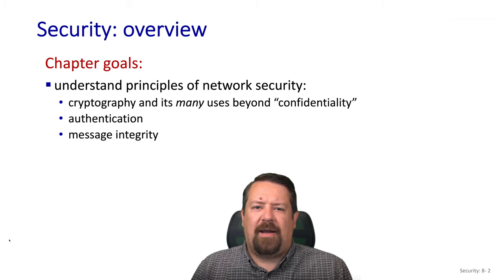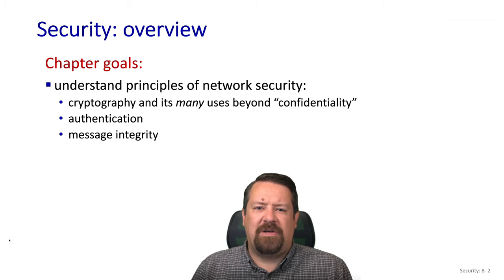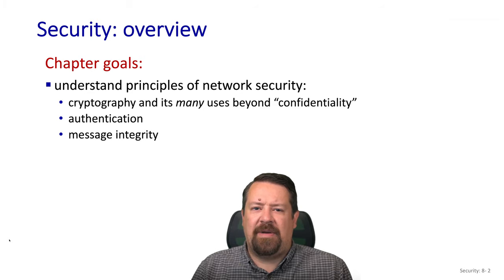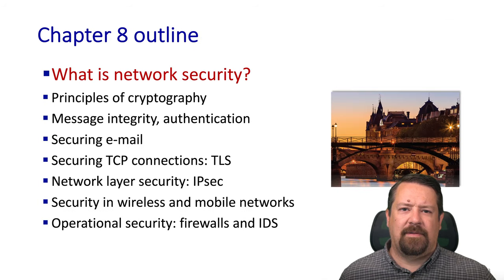Then we'll look at authentication as well as message integrity. As a side note, message integrity means that the message can't be changed without the receiver knowing that it's been changed — it does not mean that third parties can't read the message. Once we understand those basics, we'll go on to look at specific examples of network protocols and applications and how they implement security primitives. In the rest of this video, we'll just cover the basics about what we mean by network security.